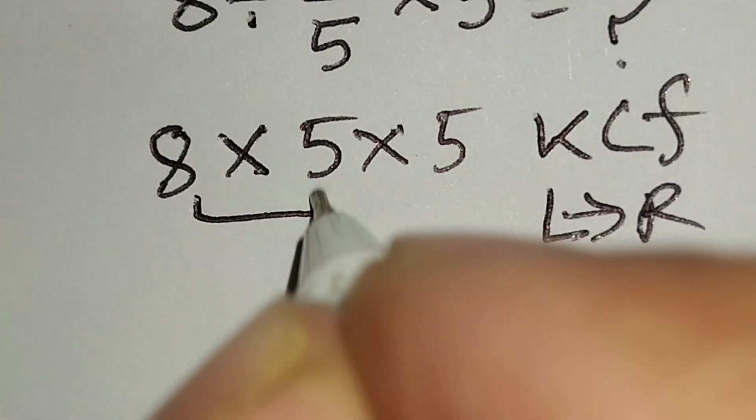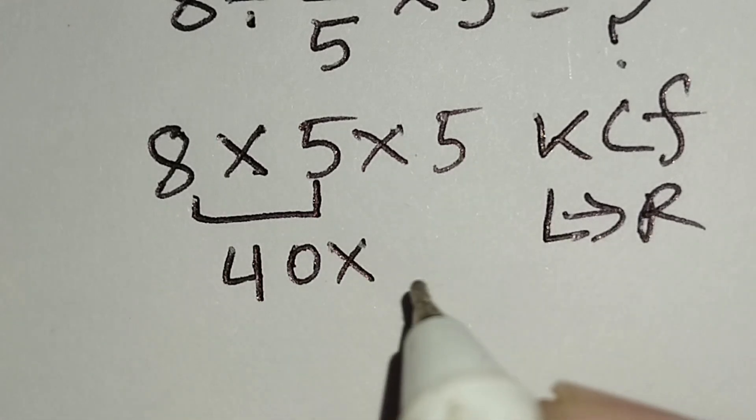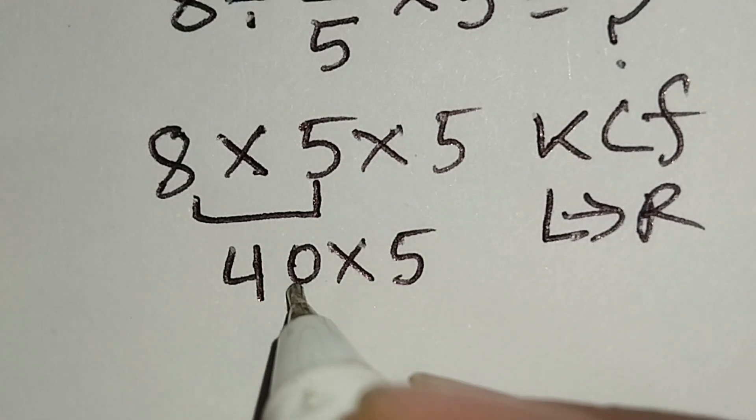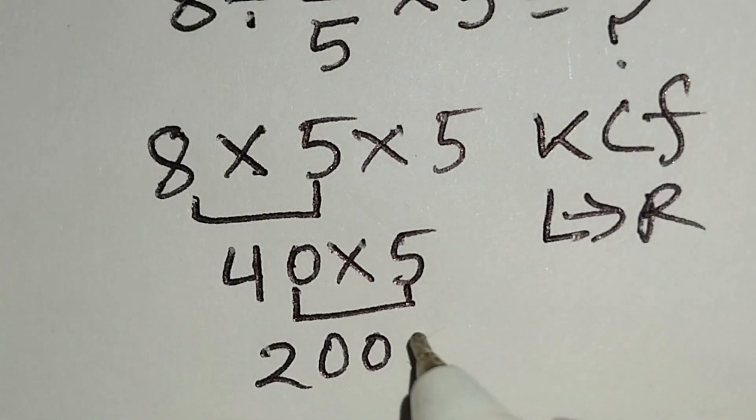Here, 8 times 5 gives us 40 times this 5. 40 times 5 gives us 200. And this is KCF.